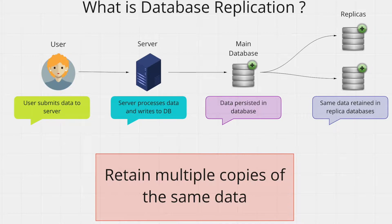Let's go through a real-world example. Say a user submits a form with some user information — the user's browser hits our backend server with this data. The server then writes the data to the main database so that it is persistent. This is where replication kicks in. Let's say you have two more replica databases; your main database will also write to those two replicas on different machines. Now all three databases will have this user information.